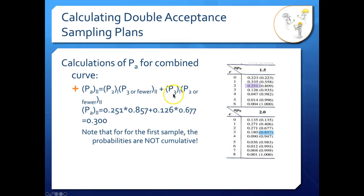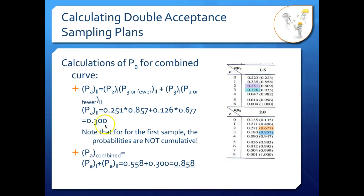But we're not quite done — we need to add the probability of accepting on the first sample to get the combined curve. Pulling the 0.558 from the previous calculation and adding our 0.300, we get 0.858. That is the probability of acceptance when we have 1% non-conforming in our population. We'll put a star by that as well, because that's our second important number for the combined OC curve.